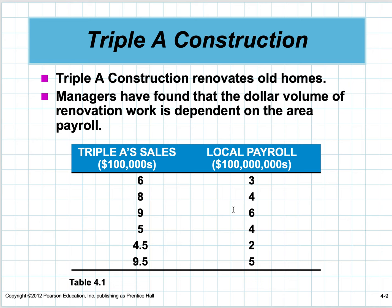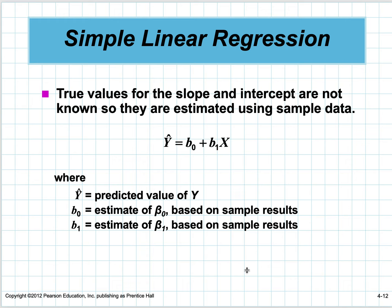Based on the sample of data, we want to estimate b-zero, the intercept of this line, and the slope of this line, and then try to get an estimate for what y will be. y-hat is the predicted value of y. b-zero estimates beta zero based on the sample we have, and b-one estimates the slope beta one using the same sample of data.